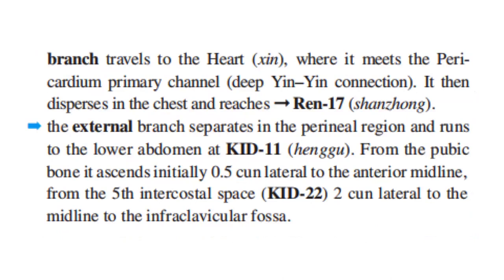The second branch is the external branch, which separates in the perineal region and runs to the lower abdomen at kidney 11. From the pubic bone, it ascends initially 0.5 cun lateral to the anterior midline. From the fifth intercostal space at kidney 22, it continues 2 cun lateral to the midline of the infraclavicular fossa.